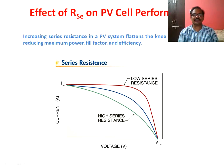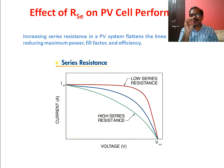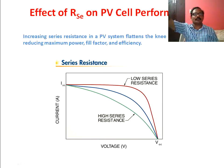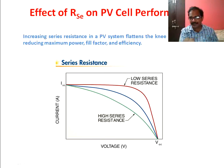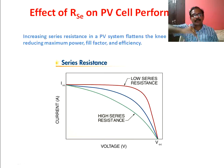Now let's look at the effect of shunt and series resistance on PV cell performance. The blue line is the normal curve. RSE should be as low as possible — ideally zero. If the RSE value is increased from zero to some other value, the curve will decrease. The blue curve will become a green curve. If the value of RSE is increased, the curve goes down — the performance of a solar cell decreases.